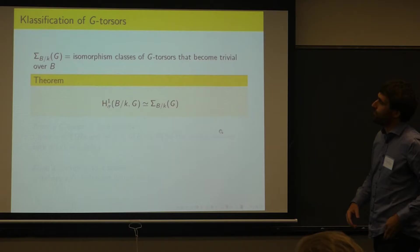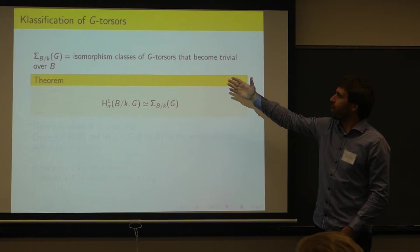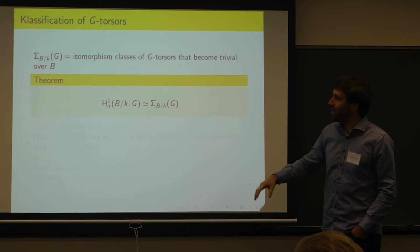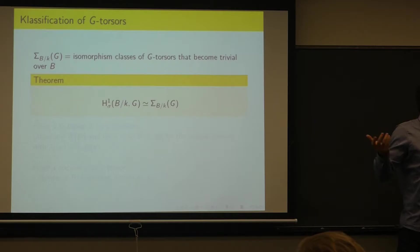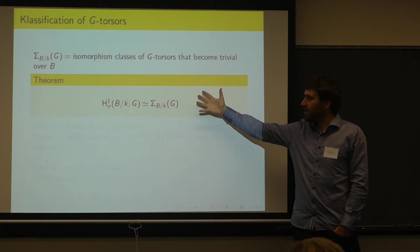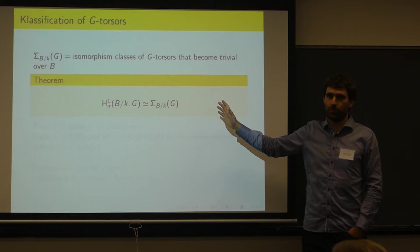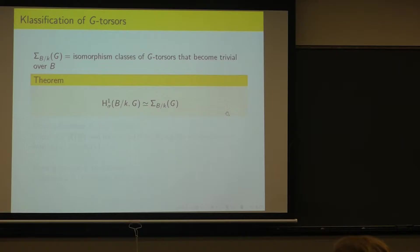The main result is that the set of isomorphism classes of G-torsors that become trivial over B is in bijection with H1(B, G). This is an isomorphism of pointed sets. So understanding H1 is essentially the same as understanding the isomorphism classes of G-torsors.